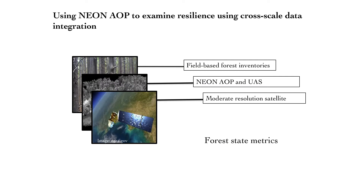AOP was intended to cover areas large enough to overlap with satellite data to allow for scaling of that data, and that's the approach we're taking. In order to capture sub-pixel change across decades, we're integrating data that has complementary information embedded within it: ground-based field inventories, hyperspectral NEON data, multi-spectral drone-mounted data, and moderate-resolution Landsat satellite data. This integration will allow us to create forest state metrics that will pair with data on disturbance history to evaluate forest recovery post-disturbance, and the AOP provides this missing link.